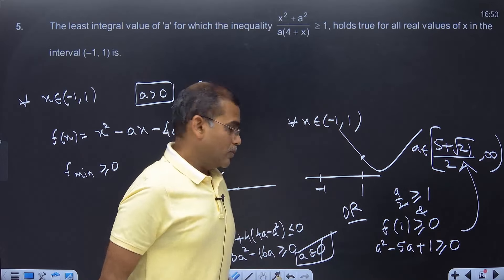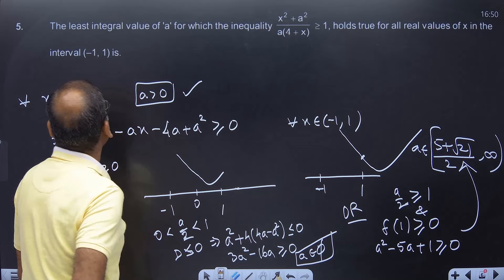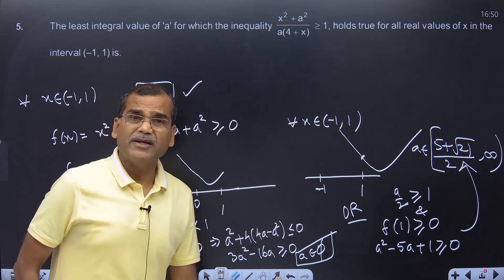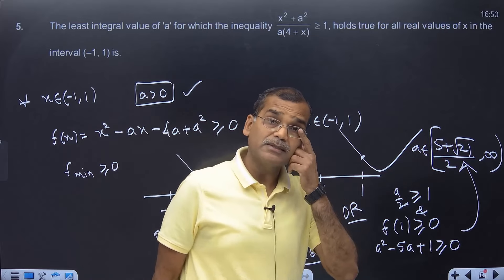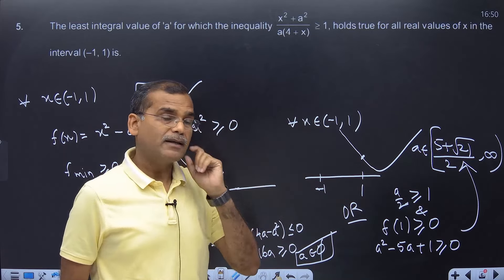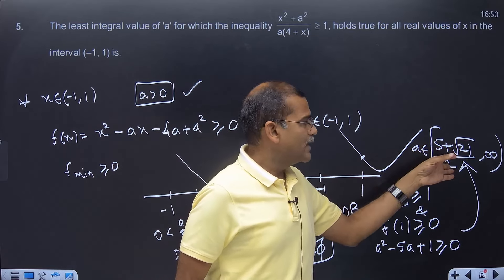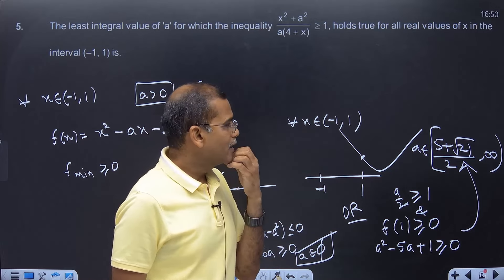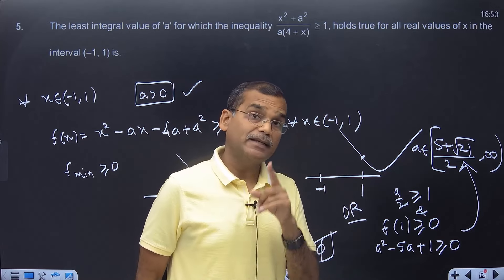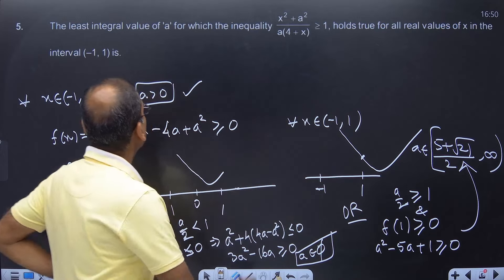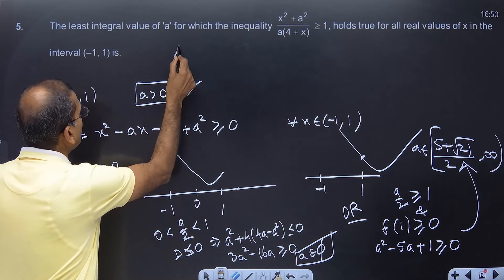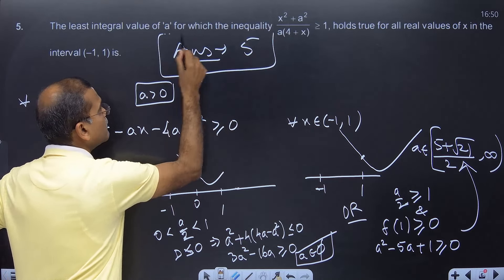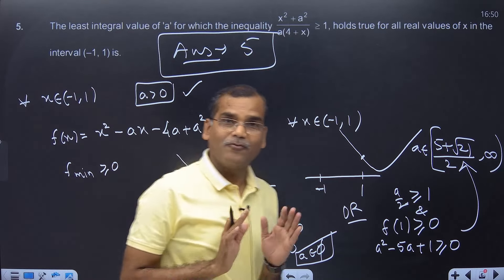So this is my final answer. Now the least integer value — approximately, √21 ≈ 4.something, so (5 + √21)/2 ≈ 4.something, meaning the interval is [4.something, ∞). So the least integer value in this interval is 5. My answer to the problem is 5.